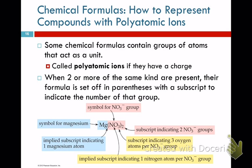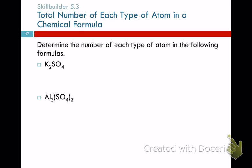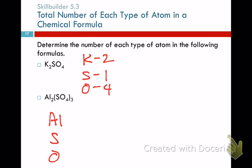Determine the number of each type of atom in K₂SO₄ — potassium sulfate. K: 2, S: 1, O: 4. Then for Al₂(SO₄)₃ — aluminum: 2, S: 3, O: 12 (3 × 4). For molecular formulas, C₆H₁₂O₆ is glucose — the molecular formula. The empirical formula just tells you the ratio: CH₂O, which is 1 to 2 to 1. That's like reducing a fraction, but keeping whole numbers because you can't have half an atom.